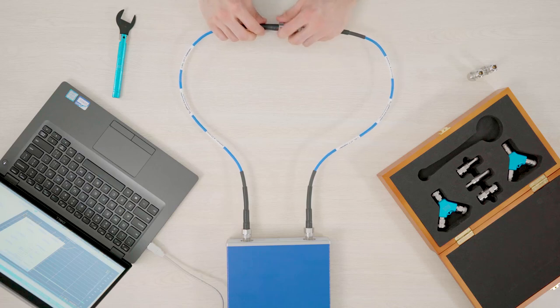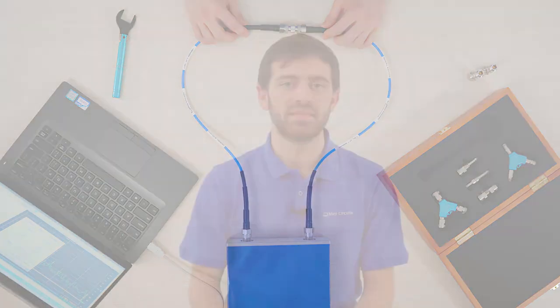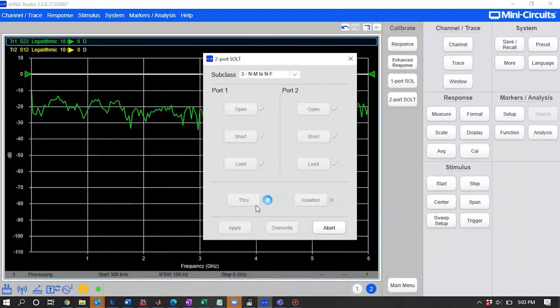For most device subclasses, including this one, use the appropriate through standard for this measurement. In the case of an insertable device, you have the option to perform a flush through calibration, which is a direct zero length connection between ports 1 and 2.